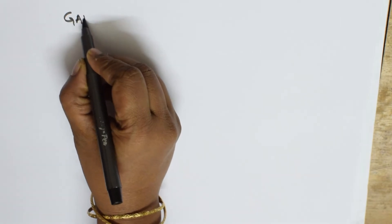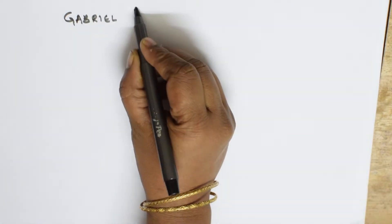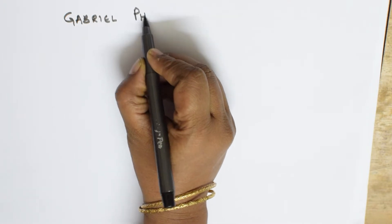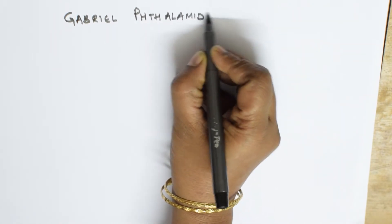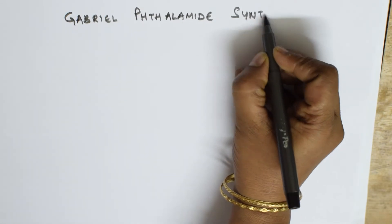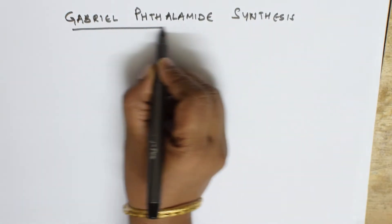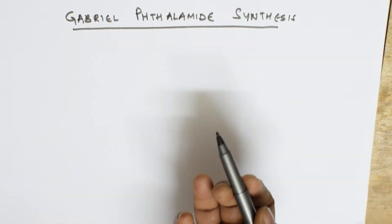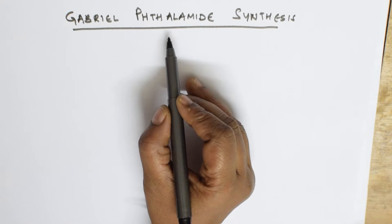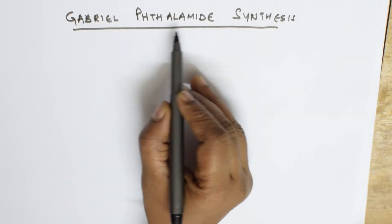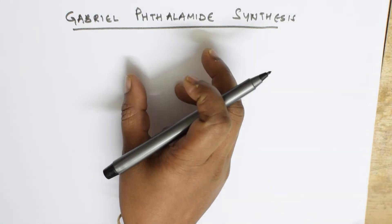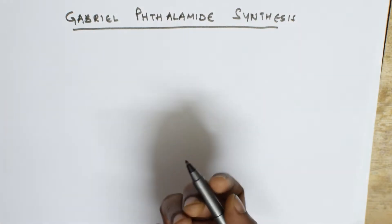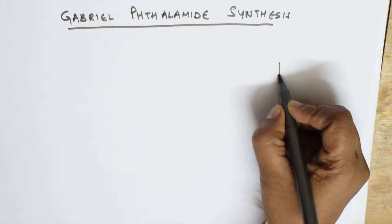Let's write the heading. We are going to learn the reaction mechanism of Gabriel phthalimide synthesis. In Gabriel phthalimide synthesis, what are we going to prepare? The basic reactant here we are going to take is phthalimide. We are going to take phthalimide and finally convert it into phthalic acid and primary amine. The most important thing about this reaction is we are going to synthesize primary amine.